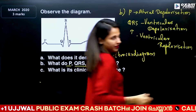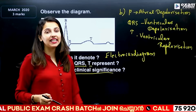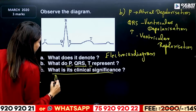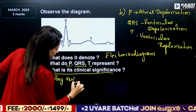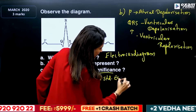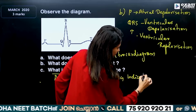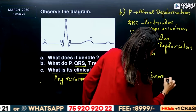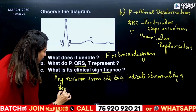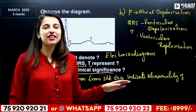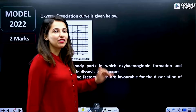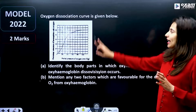This is very important. Any variation from the standard ECG curve indicates an abnormality of the heart. If we have a variation in the QRS complex, we need to check our heartbeat. ECG is very important in Body Fluids and Circulation.